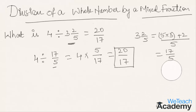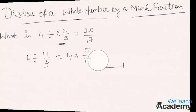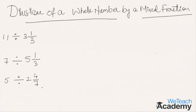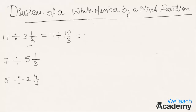Now, let us consider a few more examples and try to solve them. Let us solve the first example: what is 11 divided by 3 and 1 by 3? This equals 11 divided by the improper fraction of 3 and 1 by 3. We get 3 into 3, that is 9 plus 1, that is 10 by 3.